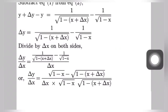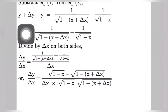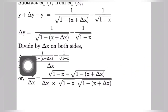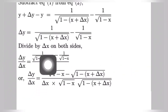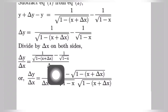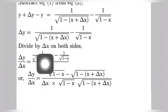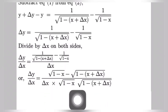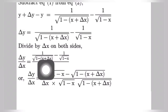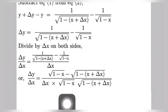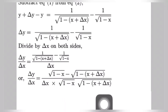Now divide this equation by del x on both sides. Then we get del y by del x equal to 1 by root under 1 minus x plus del x, minus 1 by root under 1 minus x, all divided by del x. We take the LCM of the two terms, which is root under 1 minus x times root under 1 minus x plus del x.